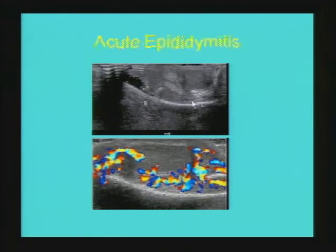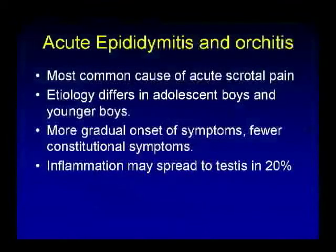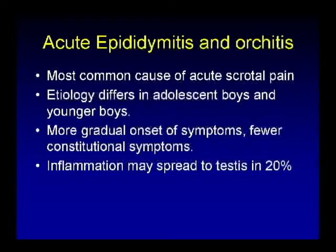The most common cause of acute scrotum in children is acute epididymitis. This transverse ultrasound at the level of the epididymis shows heterogeneous enlargement of the right epididymis. Longitudinal ultrasound with color Doppler shows diffuse increased blood flow within the epididymis with normal intratesticular flow — a classic example of acute epididymitis. Etiology differs by age group: infectious in adolescent and prepubertal age, and in younger children often due to a congenital abnormality such as an ectopic draining ureter. As compared to torsion, onset of symptoms is more gradual, with fewer constitutional symptoms, and inflammation is localized to the epididymis, though in 20% of cases it may spread to the testis causing orchitis.